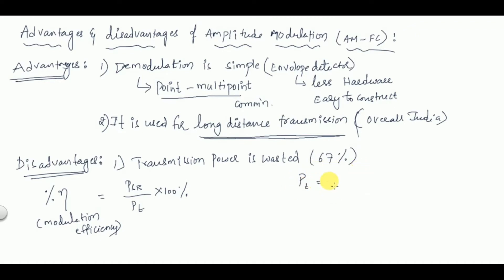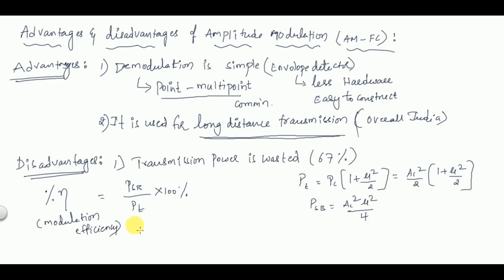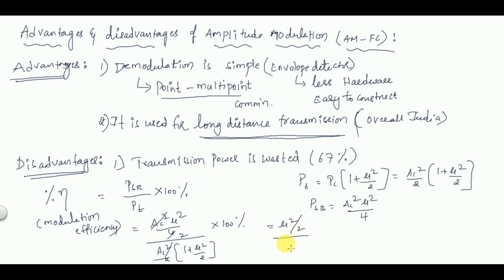Modulation efficiency is given by sideband power divided by total power transmitted, multiplied by 100 percent. We know that total transmitted power PT = PC × (1 + μ²/2), and sideband power PSP = AC²μ²/4, which can be written as (AC²/2) × (μ²/2). Simplifying, efficiency = μ²/(2 + μ²) × 100 percent. This is the modulation efficiency formula.